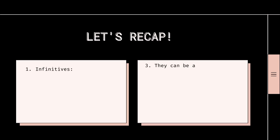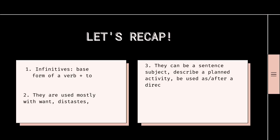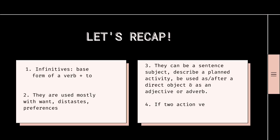So, let's quickly recap. Infinitives are the base form of the verb and 'to.' They are used mostly with want, distaste, and preferences. They can be a sentence subject. They can describe a planned activity. They can be used as or after a direct object, and as an adjective or an adverb. If two action verbs sit beside each other, then 'to' should separate them.